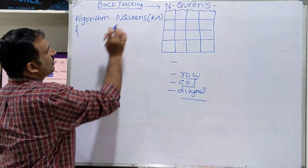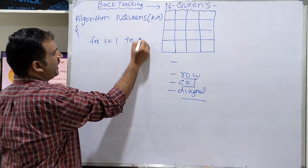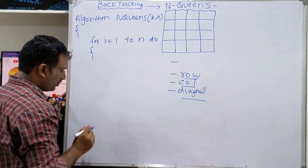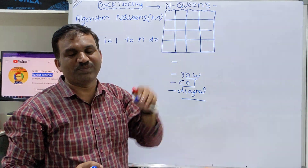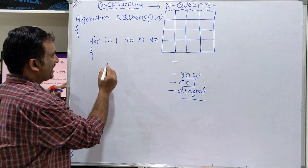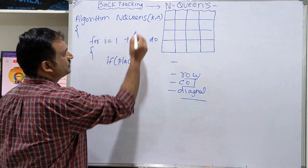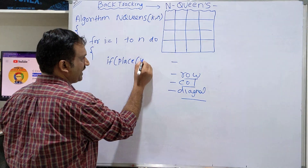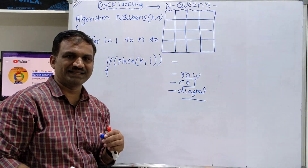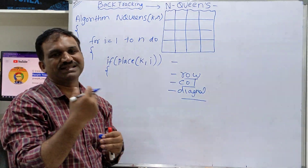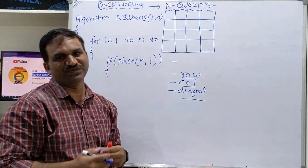Now let us write the algorithm. For i equal to 1 to n, do. Here we want to place a queen in how many positions? 4 positions. So let us check all 4 possible columns. The condition is: if place(k, i) is true, we can place it. If false, we cannot place.